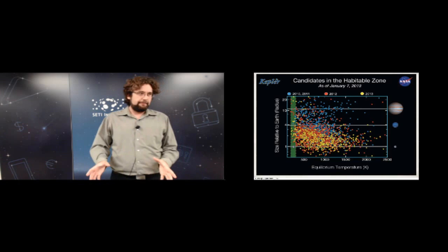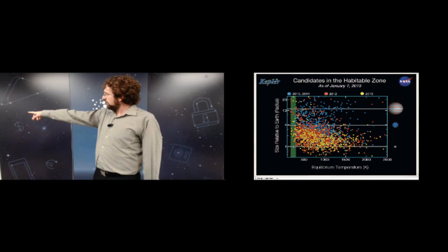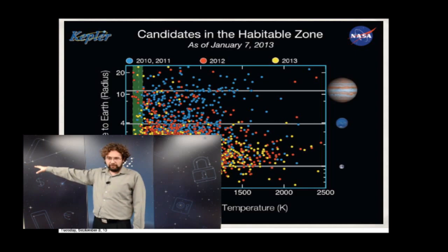This is a slide everyone concentrates on at Kepler talks — planet size versus equilibrium temperature, with people wanting to see dots around 300 Kelvin at one Earth radius. But I'm interested in the other extreme: the ones at 2,000 Kelvin. How many are small? How many are Jupiter-sized? Can we actually see emitted and reflected light from these planets because they're so close to their host star?